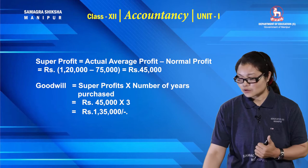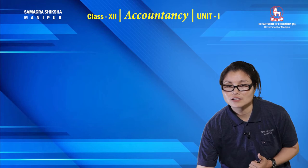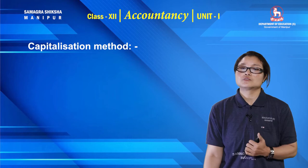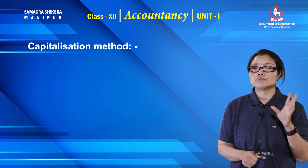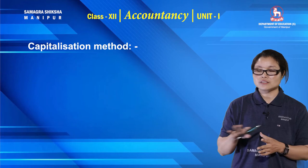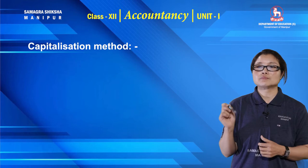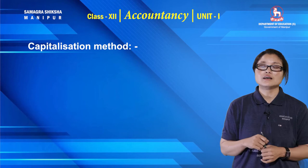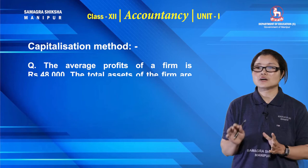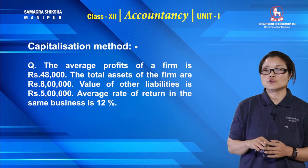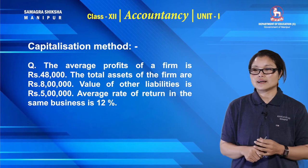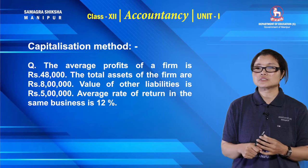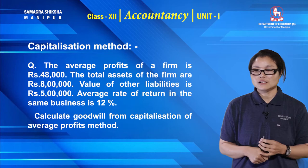Now the third example using the capitalization method. By capitalizing average profit method: the average profit of a firm is Rs. 48,000, total assets are Rs. 8 lakhs, value of other liabilities is Rs. 5 lakhs, and the average rate of return in the same business is 12%. Calculate the value of goodwill from the capitalization of average profit method.